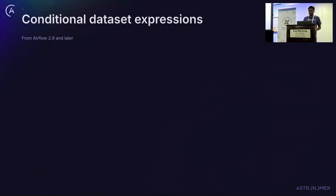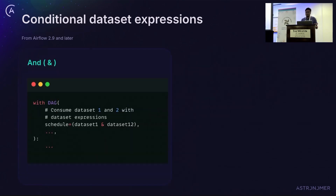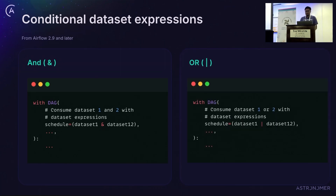An interesting feature added in Airflow 2.9 and further is the use of logical operators for complex triggering using datasets. We have added the AND operator: a DAG is triggered when all of the specified datasets are updated — in this case, both dataset 1 and dataset 2. Similarly with OR: a DAG is triggered when any of the specified datasets is updated. If either dataset 1 or dataset 2 is updated, it triggers the DAG. This allows you to fine-tune triggering for realistic scenarios.